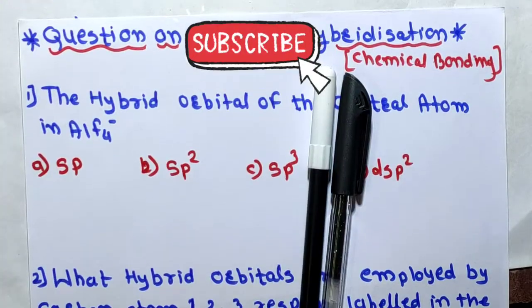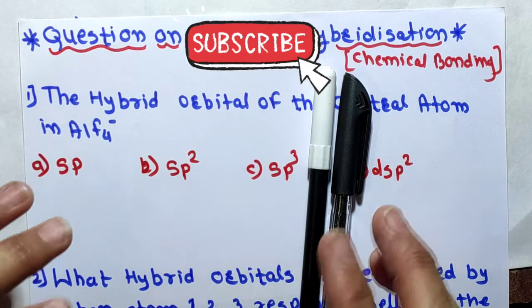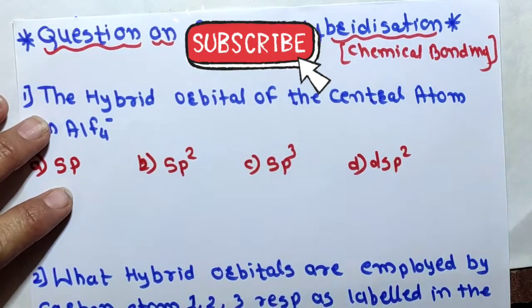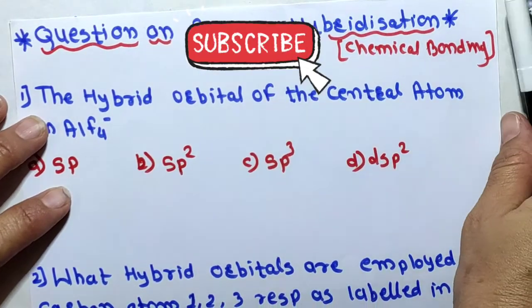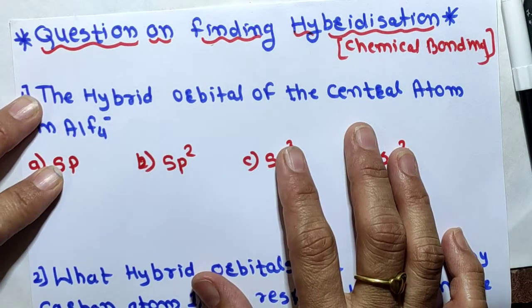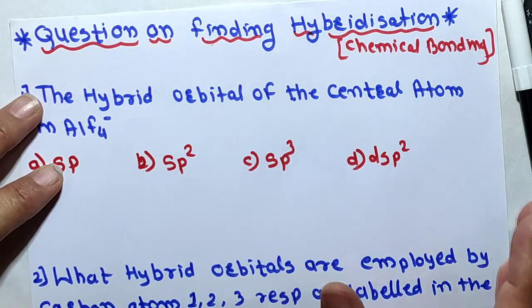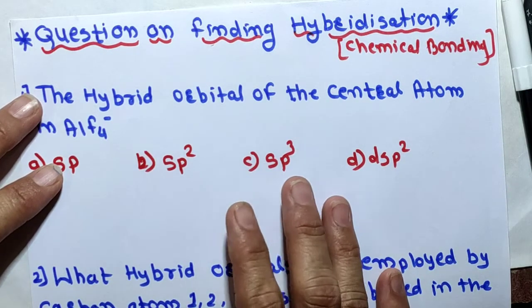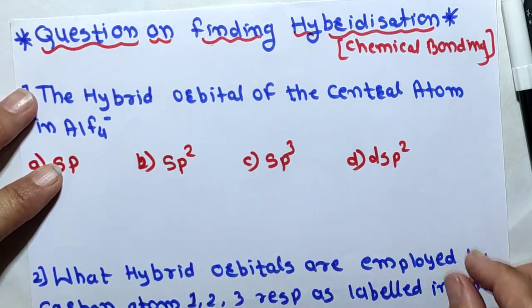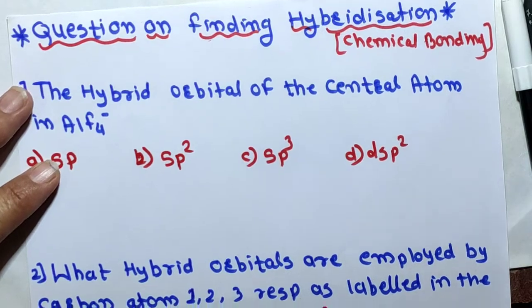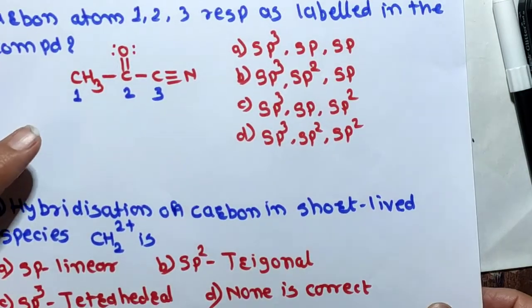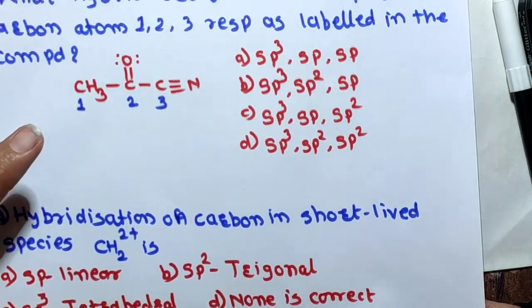Hello students, welcome to my channel. In this channel I will teach chemistry and maths in the simplest way. Today's topic is questions on finding hybridization. In one of my previous videos I discussed finding out the hybridization and lone pair of electrons. Today's session we will solve MCQs based on hybridization.